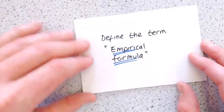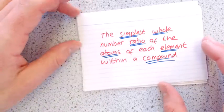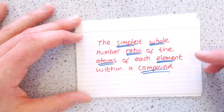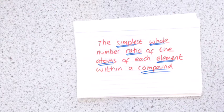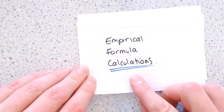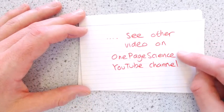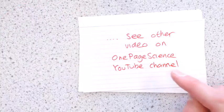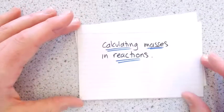Define the term empirical formula. So the empirical formula is the simplest whole number ratio of the atoms of each element within a compound. Different to the molecular formula, that's the actual number. Empirical formula calculations, which you do have to be able to do. Again, see my video. Go onto my One Page Science YouTube channel. And the next one, I'll give you a bit more detail about where it's going.